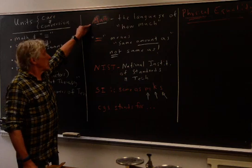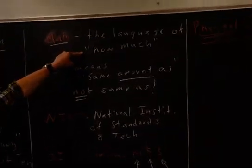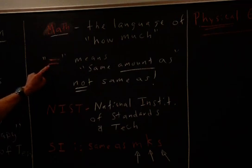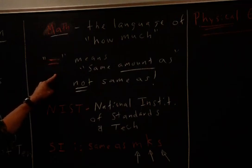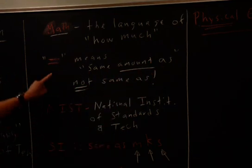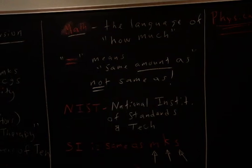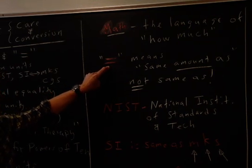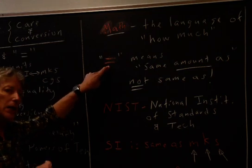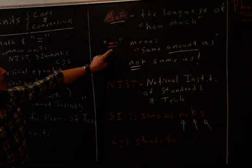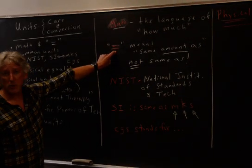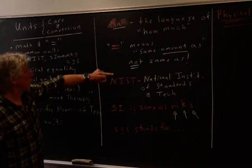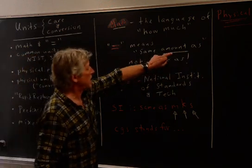Math is the language of how much. We can talk about lengths, angles, time, how much, how many things. Equals is one of the most misused symbols — it drives me nuts. Equals means 'the same amount as.' Equals does not mean 'the same as.' It's very important in physics, engineering, and sciences to use your symbols carefully, to communicate carefully — not just for getting the answer in class, but for your colleagues, papers you publish, and so on.